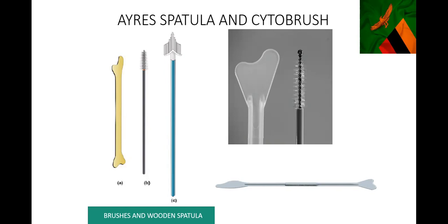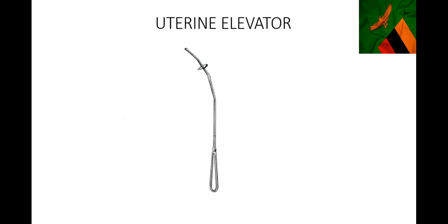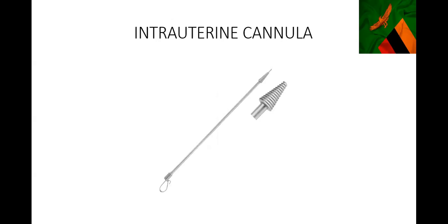This is a uterine elevator - an instrument you put in the uterus to manipulate it. Sometimes when doing a bilateral tubal ligation with a small incision, it's difficult to find the uterus. If you put this in the cervix vaginally, somebody can manipulate the uterus from below to make access easier for the surgeon. This is an intrauterine cannula, commonly used when doing an HSG - hysterosalpingogram. You insert it and screw it into the cervix, inject contrast through it, then take X-ray pictures to get your hysterosalpingogram.